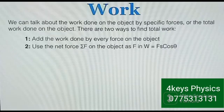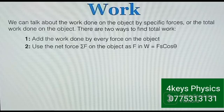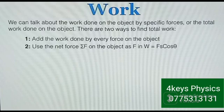We can talk about the work done on an object by specific forces, or the total work done on the object. We can look at individual forces and how much work each does, or we can look at the overall work done. There are two ways to find total work: you can add the work done by every force on the object, or you can use the net force as F in the formula W = Fs·cosθ.